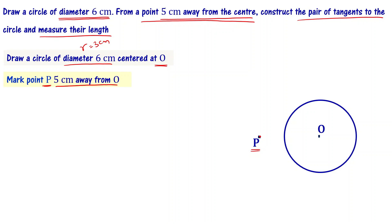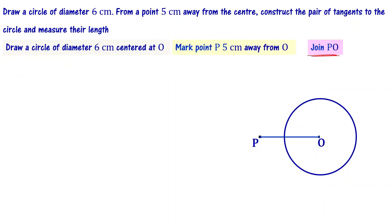From this external point P, we have to draw a pair of tangents to the circle. The next step is to join P and O. We then need to find the center point of PO — that is, draw the perpendicular bisector of PO. We want to draw a perpendicular bisector to line PO.